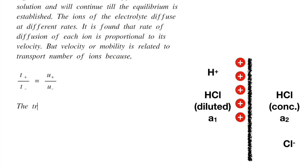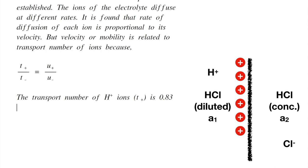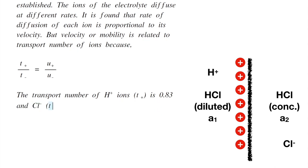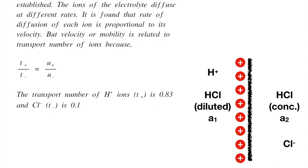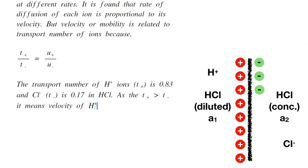The transport number of hydrogen ions t+ is 0.83 and chloride ions t- is 0.17 in HCl solution. As the t+ is very high compared to t-, it means velocity of hydrogen ions is greater than chloride ions.